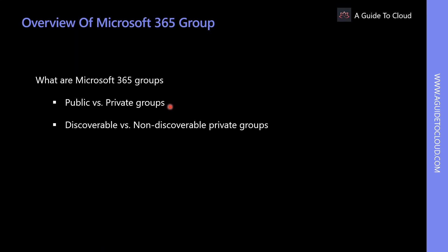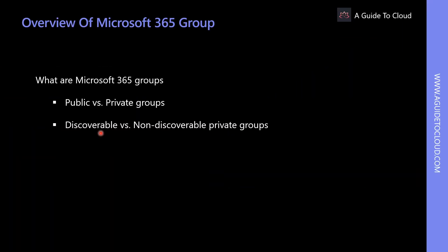For private groups, content can only be seen by the members of the group. People who want to join a private group must be approved by a group owner. Private groups are separated into discoverable and non-discoverable private groups. Discoverable private groups can be seen by all users of a tenant, and users can file a request to join. In non-discoverable private groups, these groups are only visible to users that are already members.